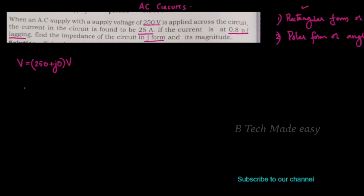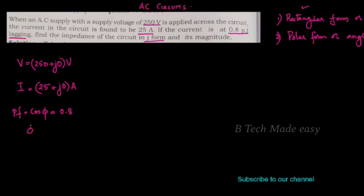The current in the circuit is found to be 25 amperes, so current I equals 25 amperes, represented as 25 plus j0. The current is at 0.8 power factor lagging, meaning the angle phi equals cos inverse of 0.8, which is 36.86 degrees.